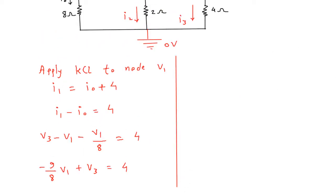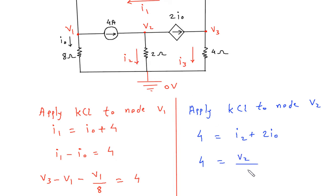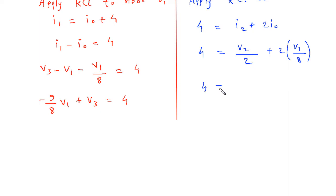Now apply KCL to node V2. At node V2, entering current is 4A, which equals leaving current I2 plus 2IO. So: 4 is equal to I2, which is V2 minus 0 by 2, plus 2IO. IO is V1 minus 0 by 4. This gives: 4 is equal to V2 by 2 plus V1 by 4.